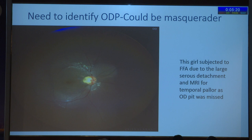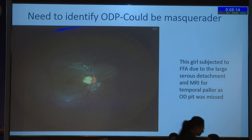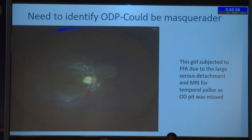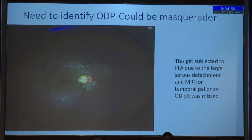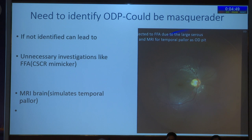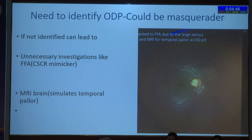I'll show you a case that was diagnosed as CSR. This girl underwent every investigation by a retina specialist. They did the FFA — nothing came up. They found some temporal pallor and sent her to the neuroclinic, where only an MRI was done. Ultimately when the case was sent to us with a 90-diopter lens and OCT, yes, it was diagnosed. Diagnosing ODPT starts with the diagnosis — it is the simplest thing.